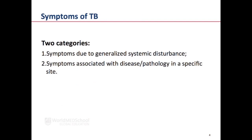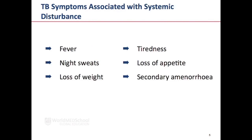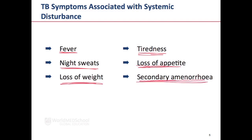The symptoms of tuberculosis can broadly be divided into two categories: those due to a generalised systemic disturbance, and those associated with disease or pathology in a specific site or organ. Symptoms of generalised systemic disturbance include fever, night sweats, loss of weight, tiredness, loss of appetite, and other symptoms including secondary amenorrhea. It is very rare that patients will have TB without one or more of these symptoms.